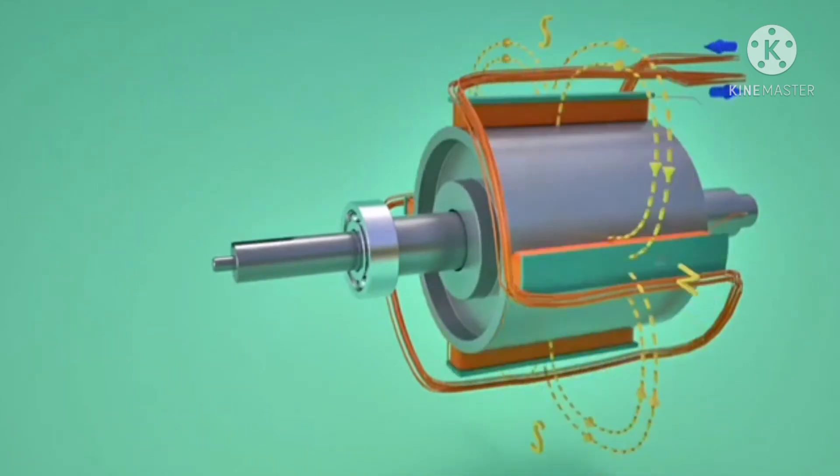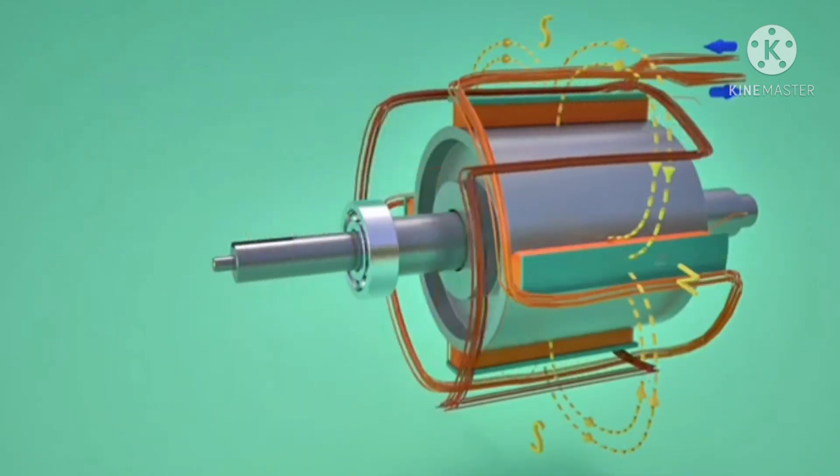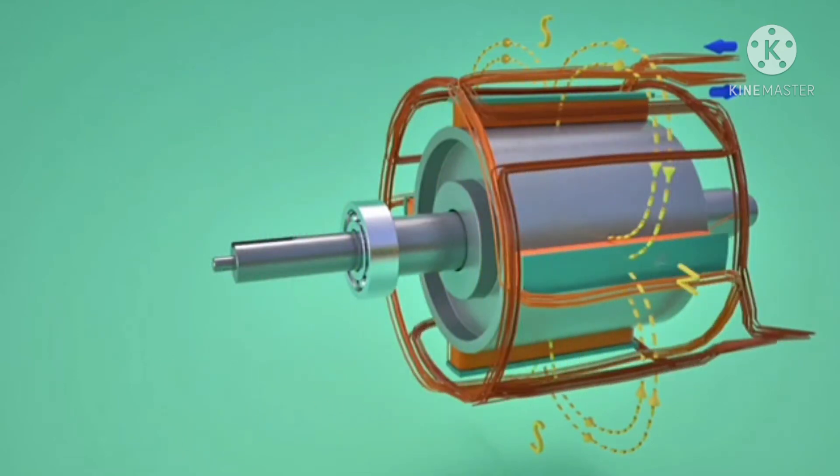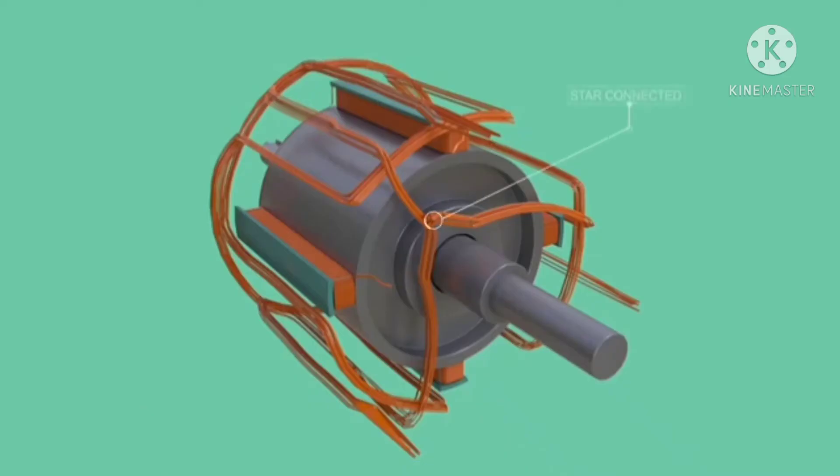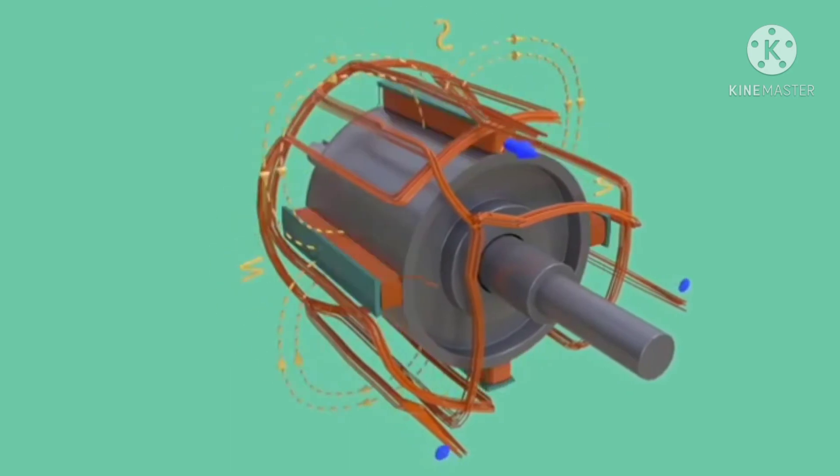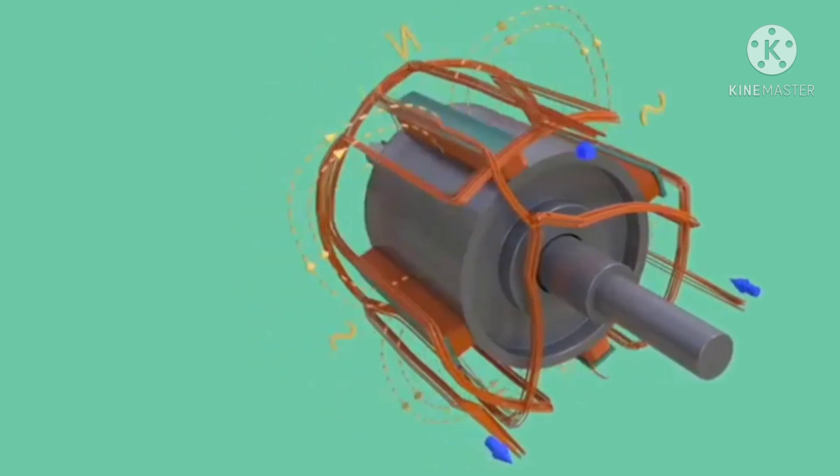For producing three-phase AC current, two more such armature coils which are in 120-degree phase difference with the first are put in the stator winding. Generally, one end of these three coils are star connected, and three-phase electricity is drawn from the other ends. Neutral cable can be drawn from the star connected end.